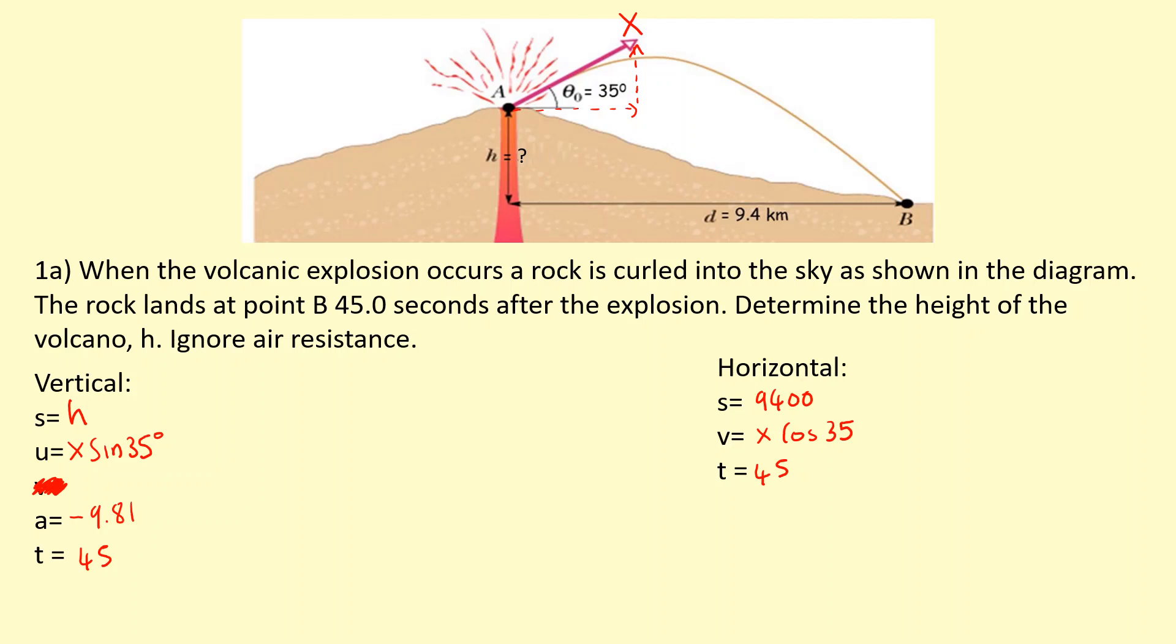Using the equation v equals s over t, we get 9400 over 45, which gives 208.89 meters per second. That's the horizontal velocity. However, we're interested in the actual speed X that was fired at, so if we divide that by cosine 35, we get X equals 257.72 meters per second.